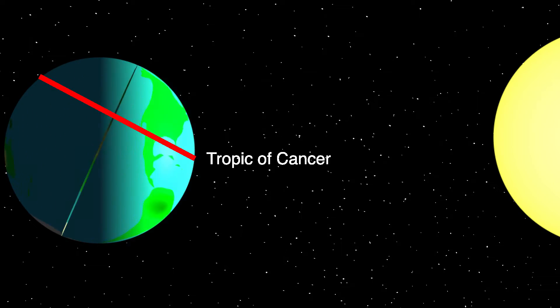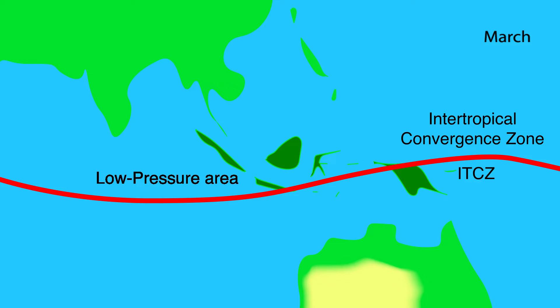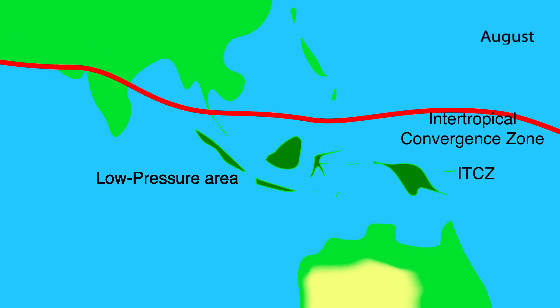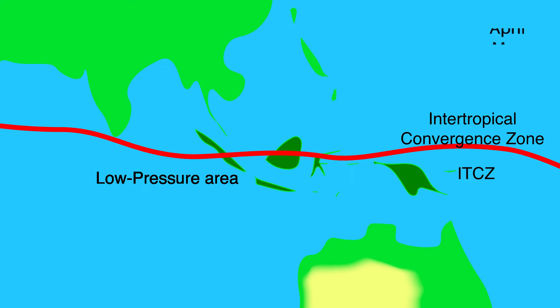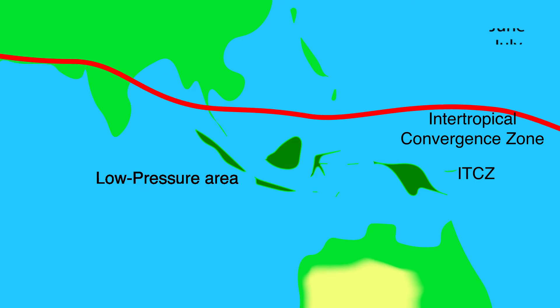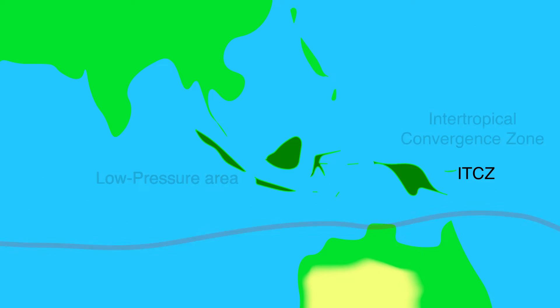Although there is huge variety per season, on average per year the equator receives the most energy. This energy causes a low pressure area. This low pressure area around the equator is called the Intertropical Convergence Zone, or the ITCZ. Because the energy of the sun varies per season, so does the exact location of the ITCZ, causing a precipitation pattern between the Tropic of Capricorn and the Tropic of Cancer where rain and dry seasons exist.